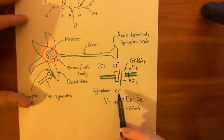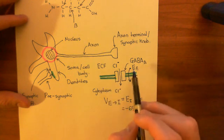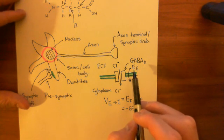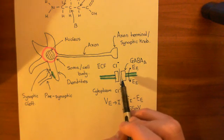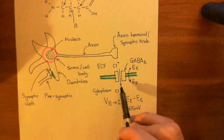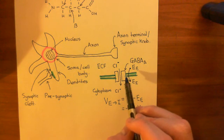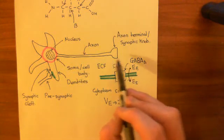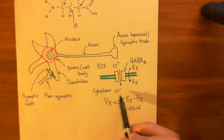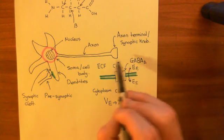Chloride anions are negatively charged — they want to be where the electrical potential is higher, so they want to be in the extracellular compartment. Now, if we open the GABA-A receptor, the chloride anions are going to come into the cell. That doesn't seem to make sense, but basically the concentration gradient between chloride anions in the extracellular fluid and those in the intracellular fluid beats the electrical gradient that is trying to keep them in the extracellular fluid.